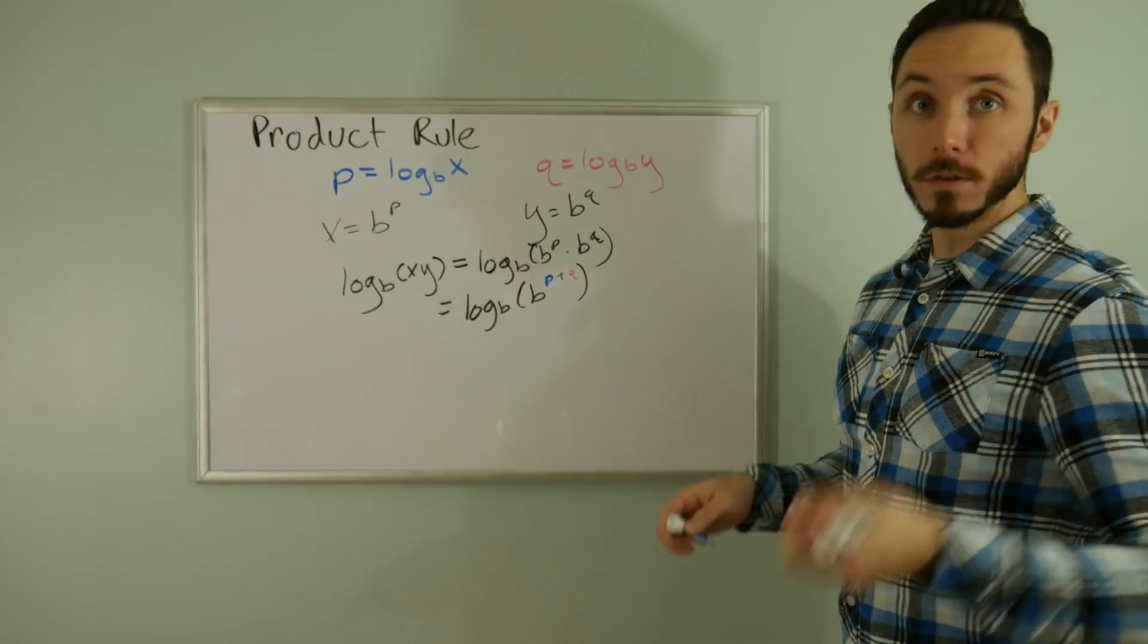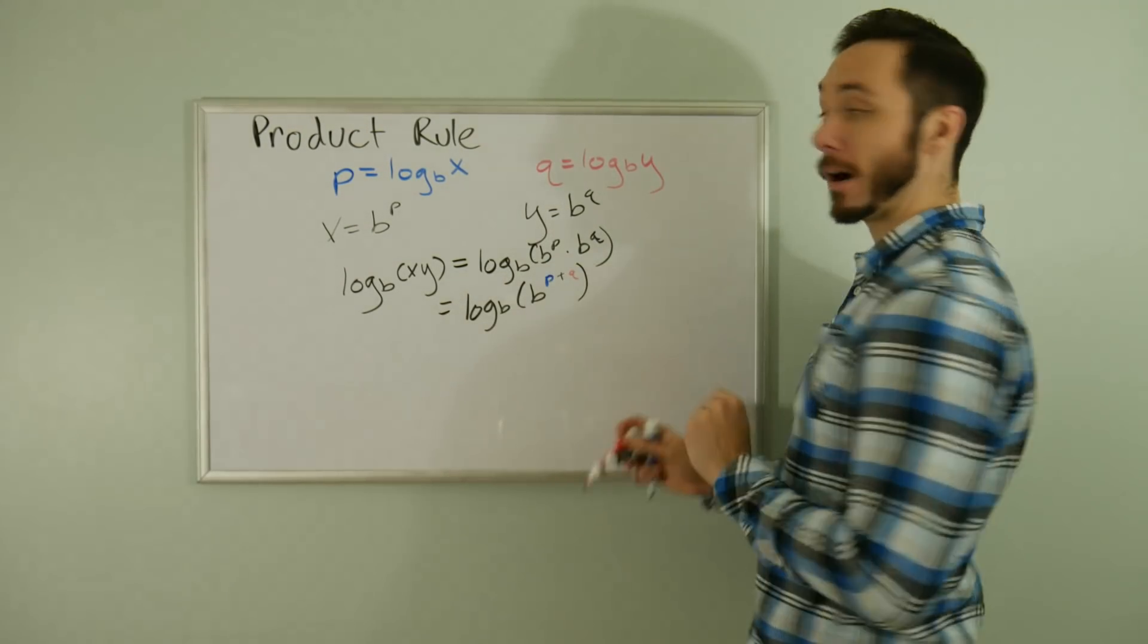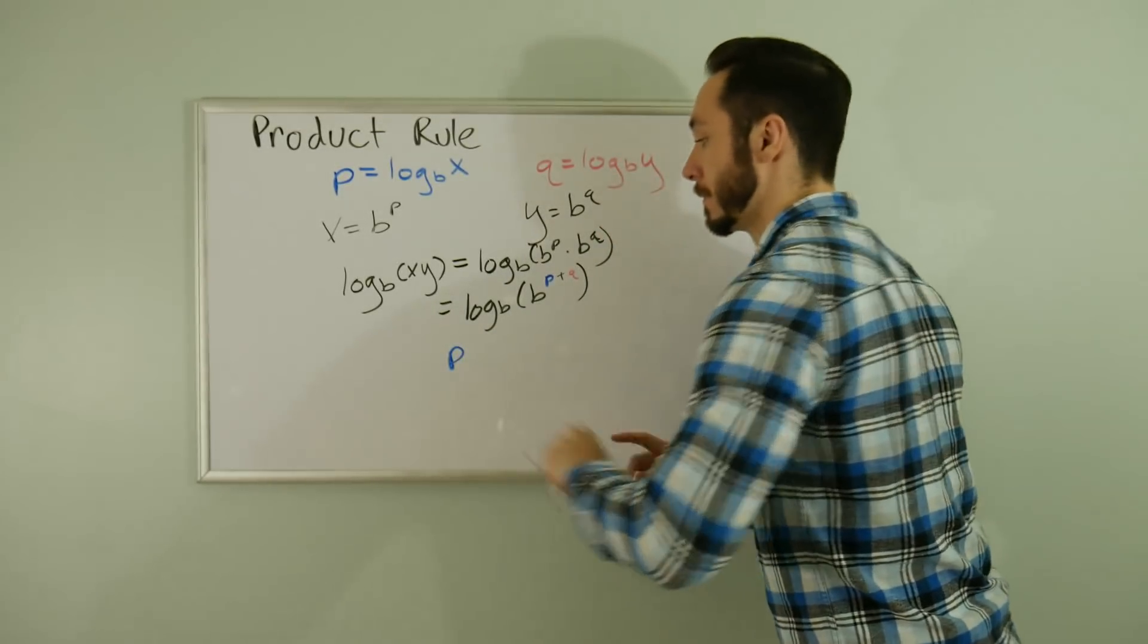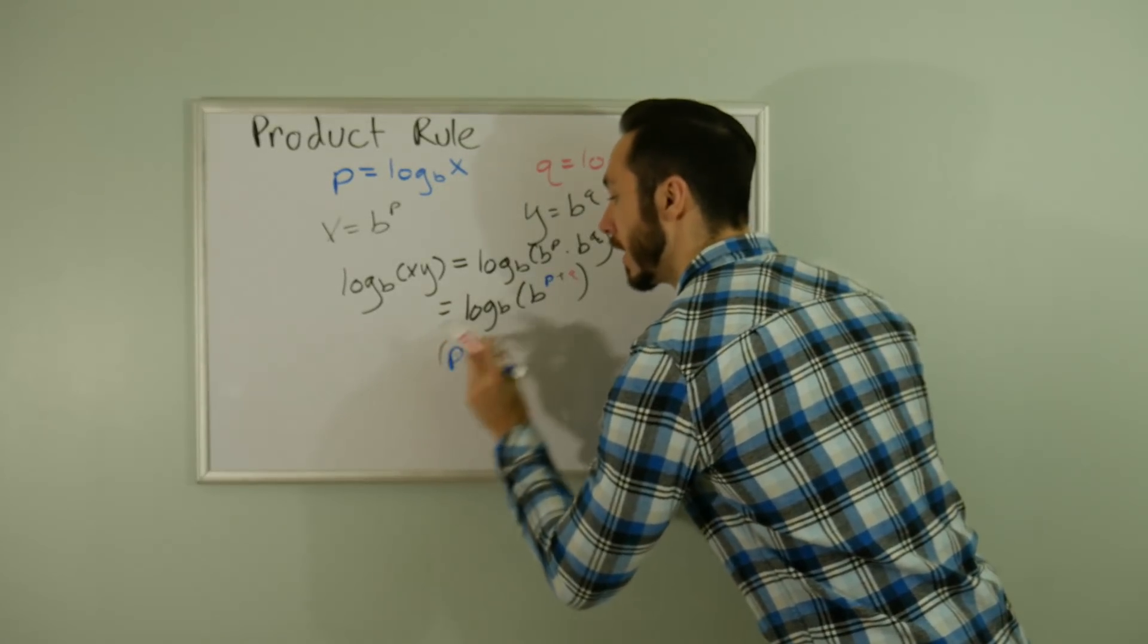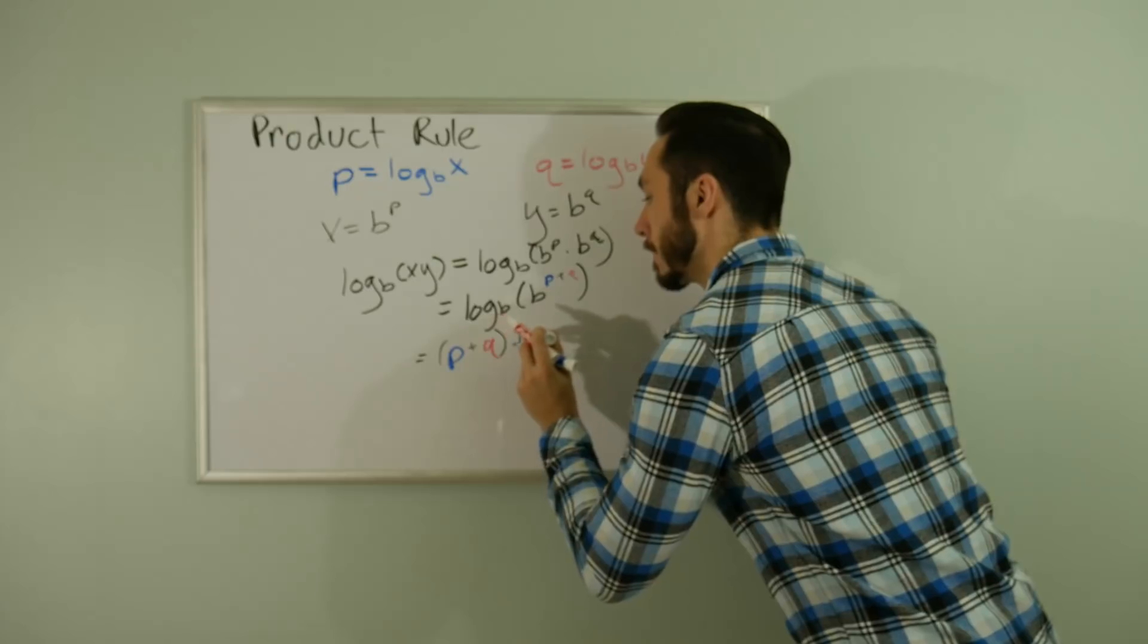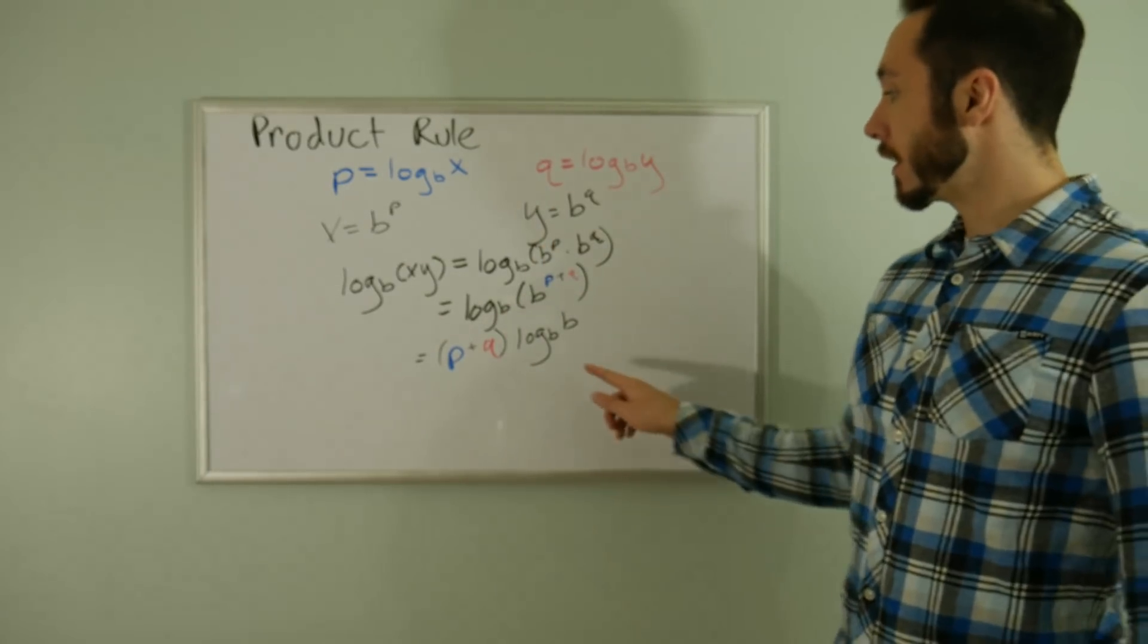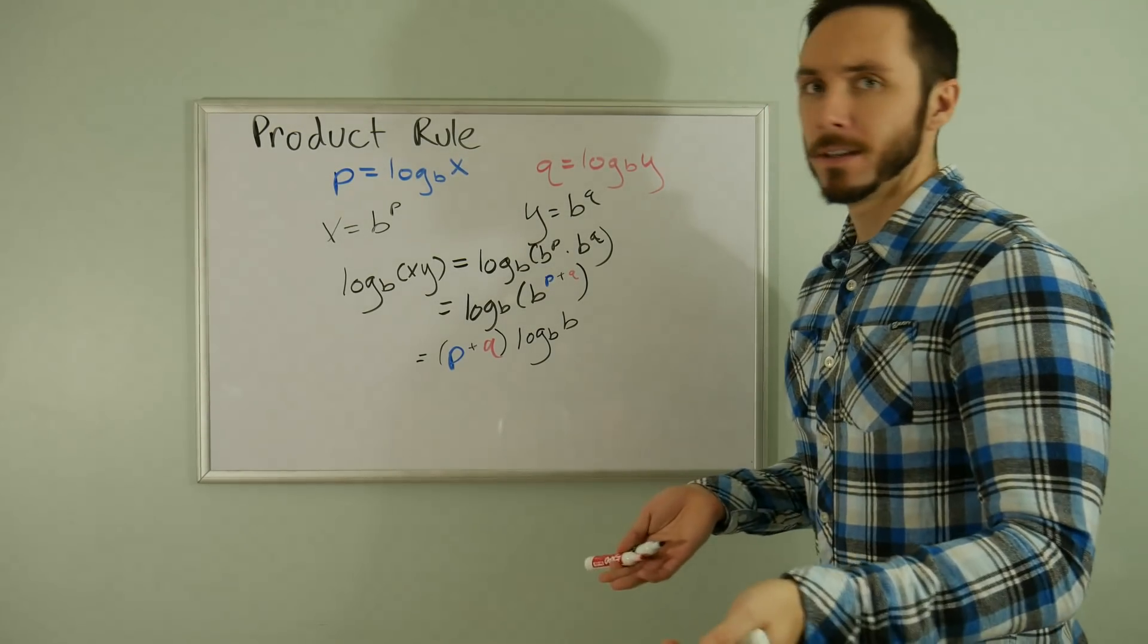Now we can use the newfound property from just a minute ago. I can take this power of P plus Q and sneak it up front. Log base B of B - B to what power is B? Well, that's just one, so that cancels.